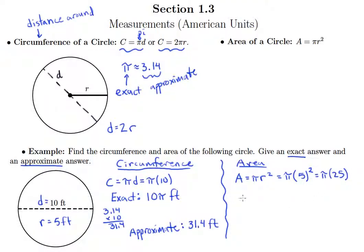So our exact answer for area is 25 pi, but since it's an area we're not going to just measure in feet, we're measuring in square feet.